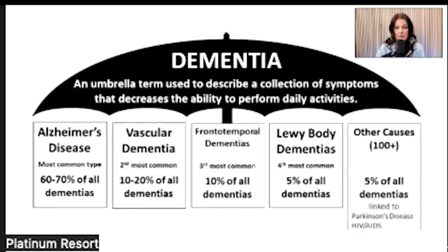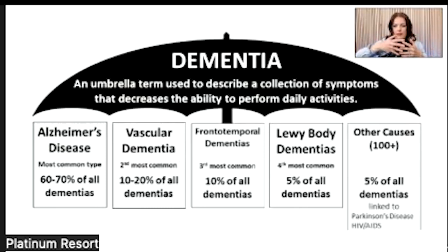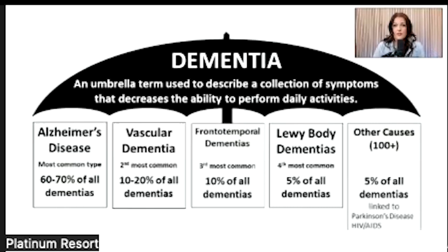The fourth form is dementia with Lewy bodies, or DLB, which accounts for 5% of all dementia cases. DLB is associated with Lewy bodies, which are clumps of abnormal protein particles that, for reasons not fully understood, accumulate in the brain. These deposits form the dementia called Lewy body, which is what the late actor Robin Williams suffered from. They found that 40% of his brain was taken over by this Lewy body protein.